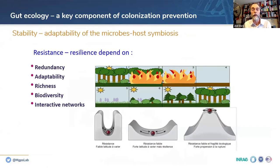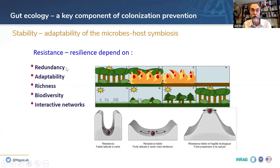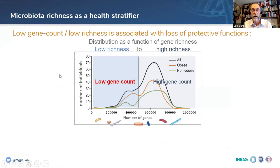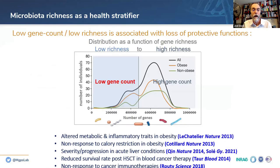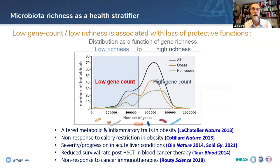Gut ecology is a key component of homeostasis. The stability and adaptability of the microbiota and microbial symbiosis depends on features of ecology summarized as resistance and resilience of the system. These depend on taxonomic and microbial redundancy, functional redundancy, adaptability, richness, biodiversity, and interactive networks between microbes. This determines whether the system is flexible or resistant to change — illustrated by a deep or shallow valley in ecological terms — or whether it can shift into a completely different stable state.